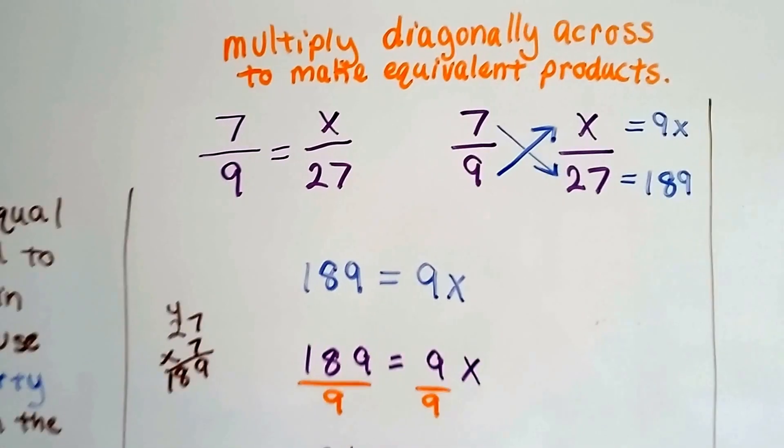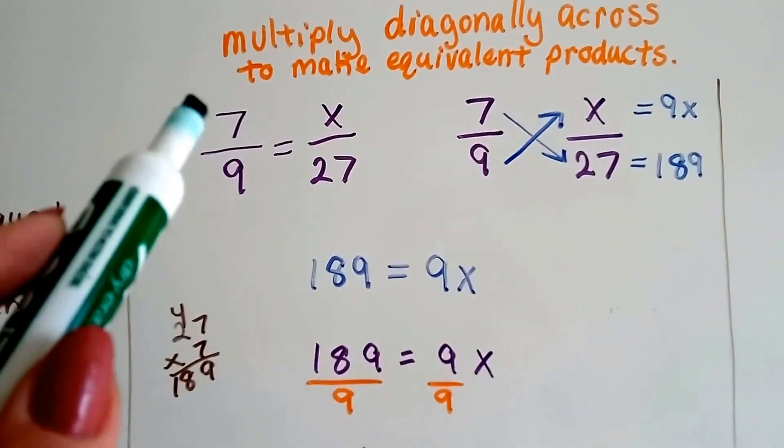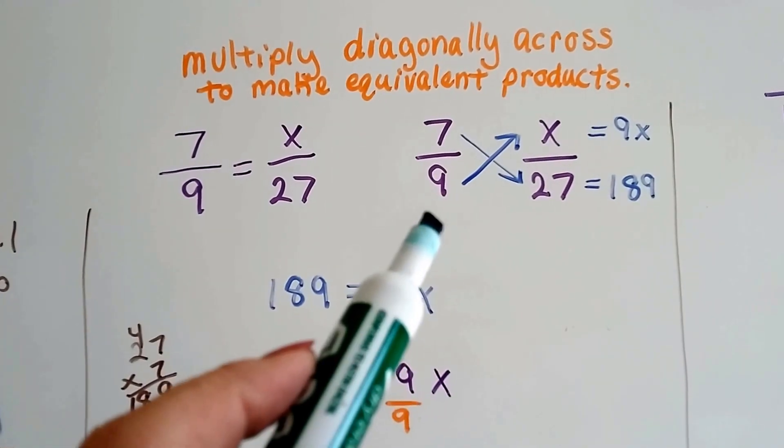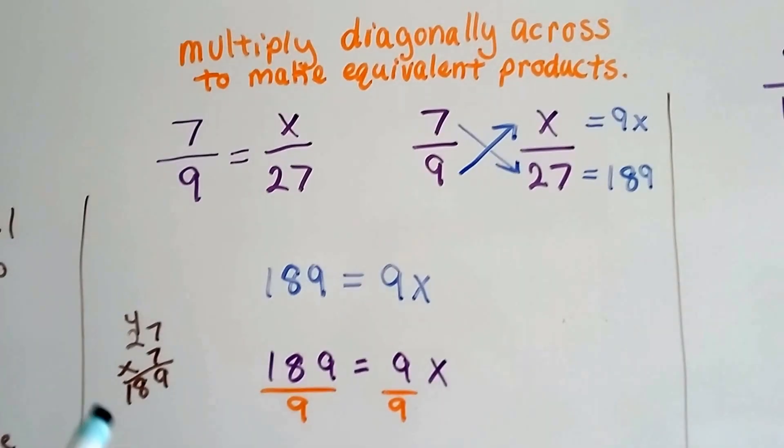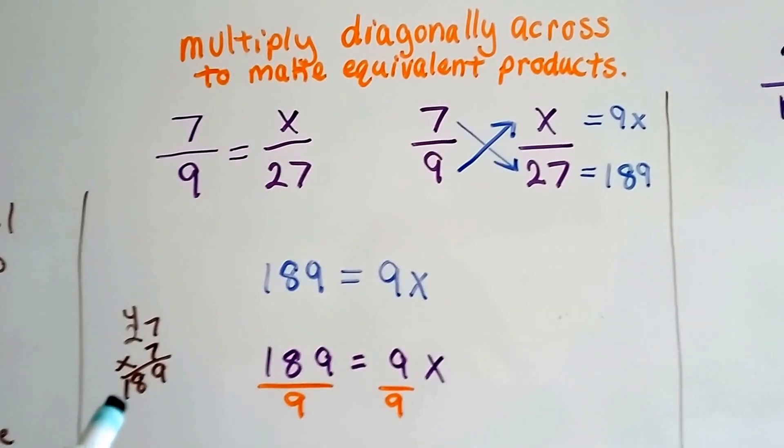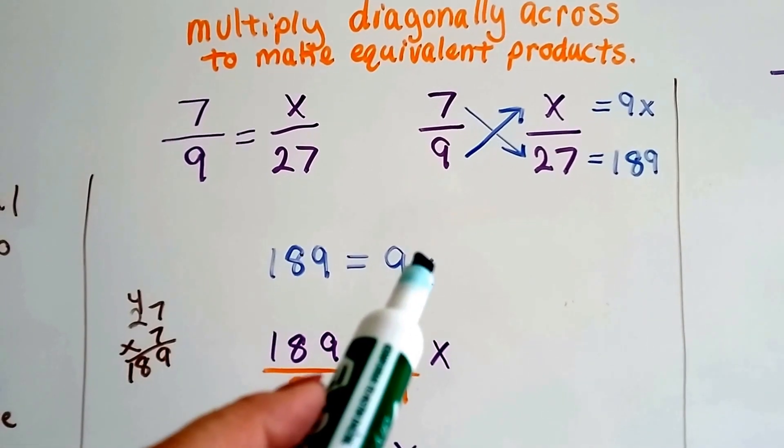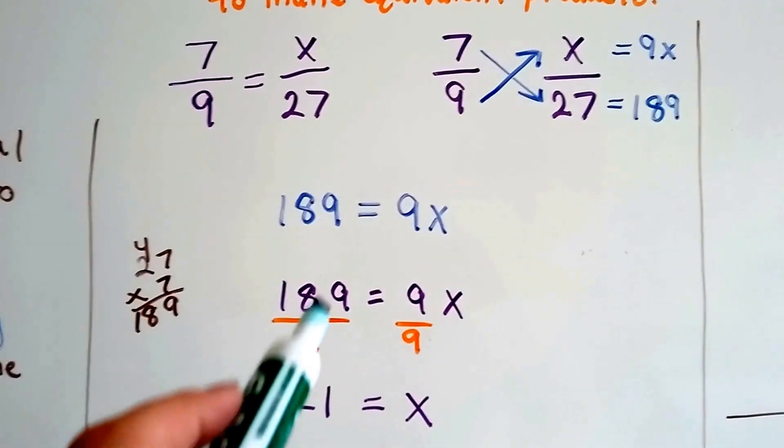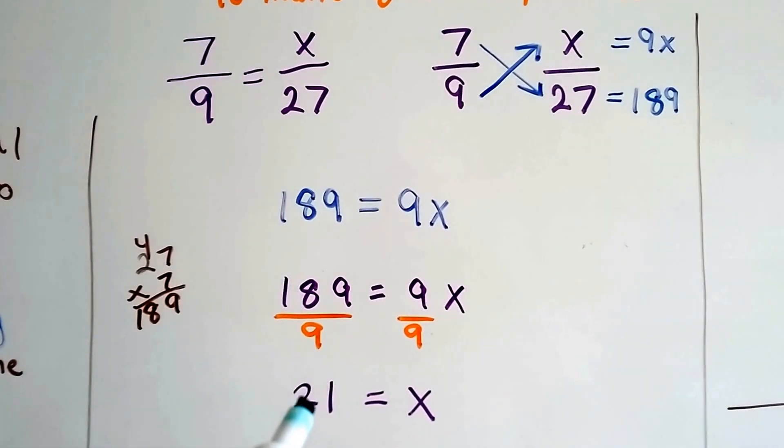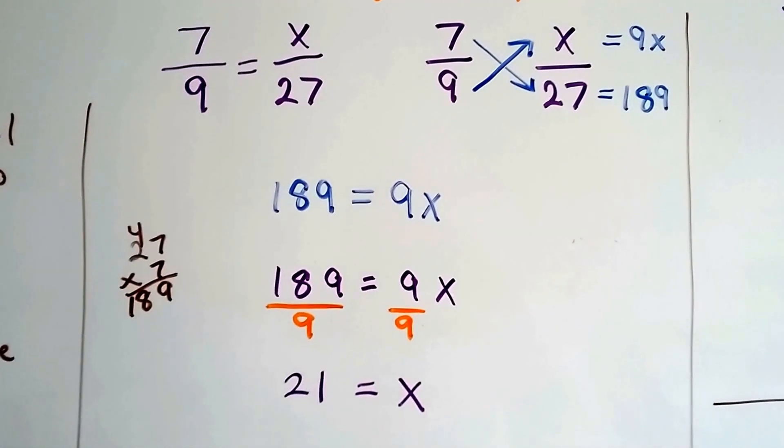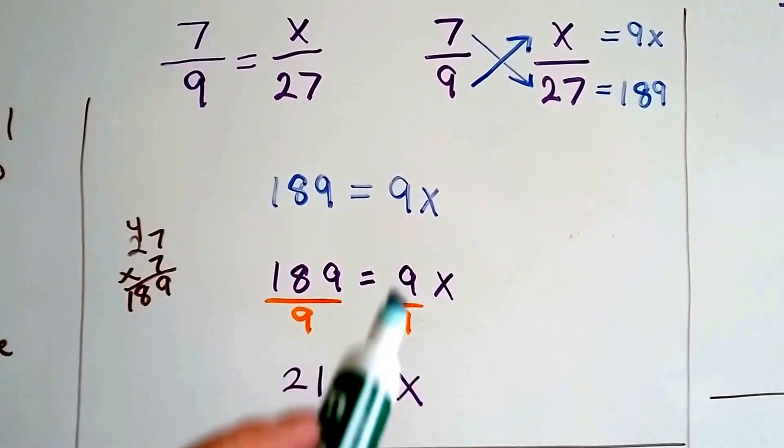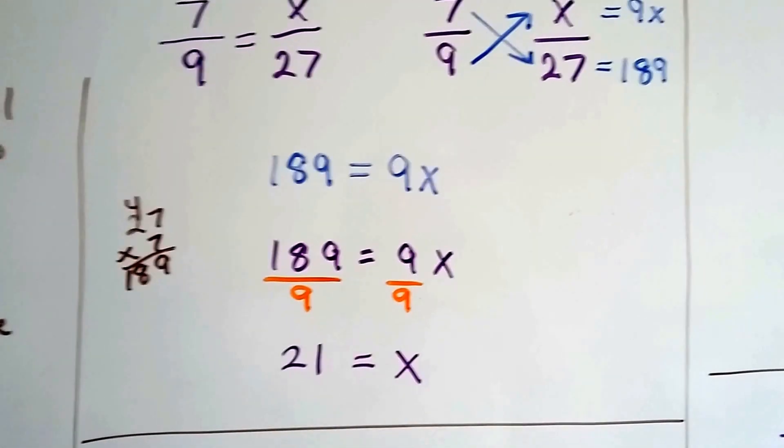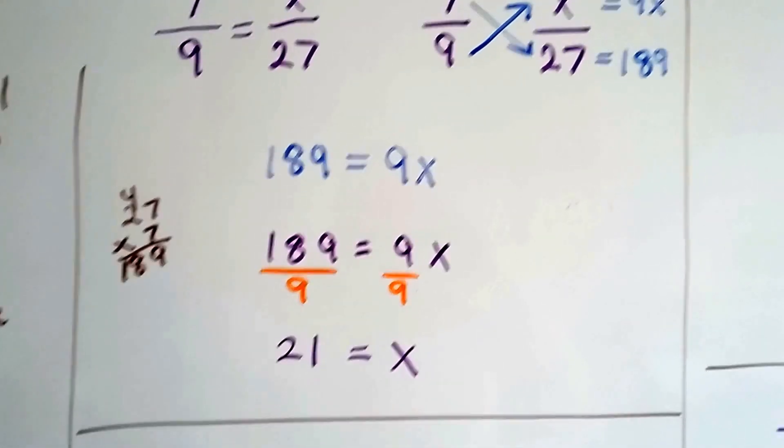If we have seven-ninths equals x over 27, all we have to do is multiply across to make our equation. Seven times 27 equals 9x. And we do a little math on the side and we see seven times 27 is 189. So we have 189 equals 9x. We just divide both sides by this coefficient nine. Nine goes into nine one time and nine goes into 18 two times. So 189 divided by nine is 21. That was an easy one. And this nine over nine is the identity property. It's a one times x is 1x. See? That's our buddy, the invisible one.